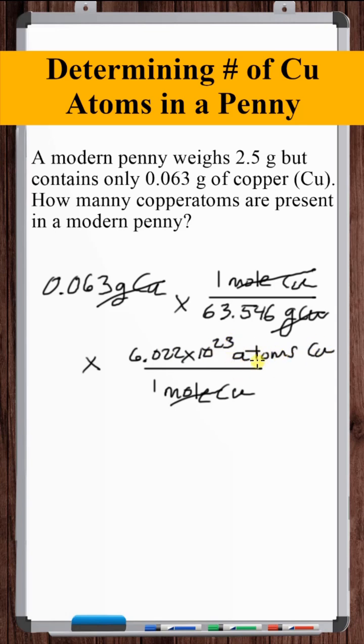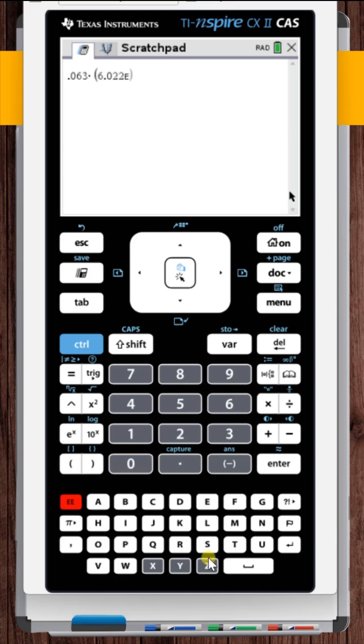So there we go. That's the unit that we're looking for. Let's multiply all this out. And that's your answer.